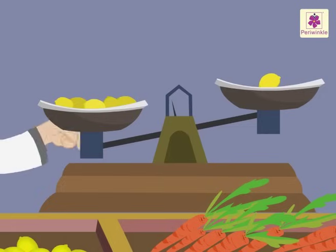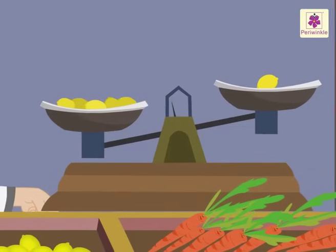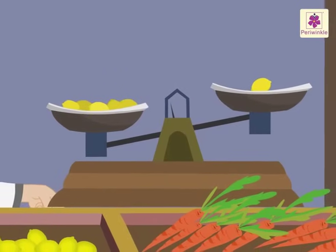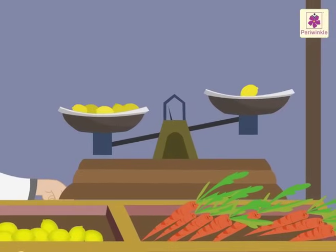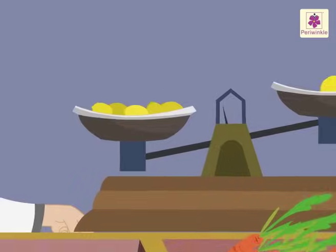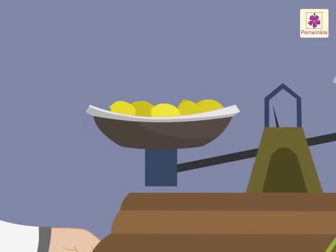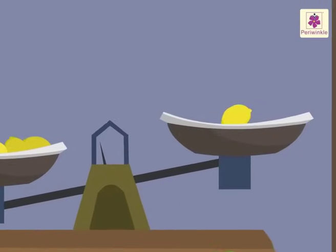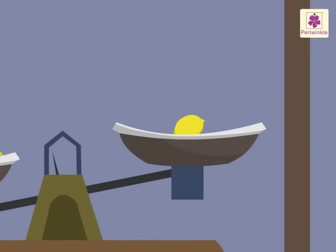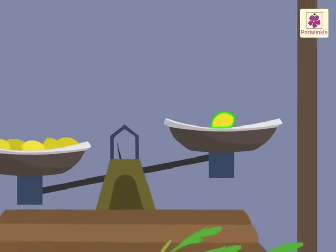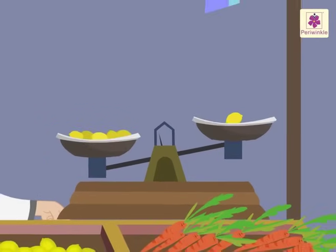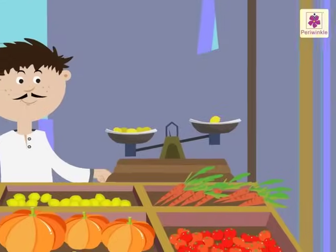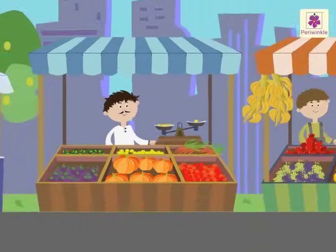See, now Ragu is keeping lemons on the weighing scale. He kept five lemons in one pan and one lemon in the other. The pan with the five lemons went down and the pan with the one lemon went up. It means that one lemon is lighter than five lemons. Hope you had fun weighing the vegetables with Ragu!